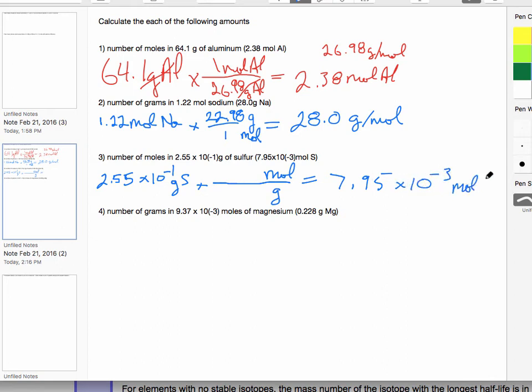Write it like this, which is 7.95 × 10^-3, and the answer is moles of sulfur. And we'll do one last one, just to bring this one home. It's going to be number of grams in 9.37 × 10^-3 moles of magnesium. It's the other way around. I'm going to write 9.37 × 10^-3 moles of magnesium. And we're going to multiply that by the grams per mole of magnesium.